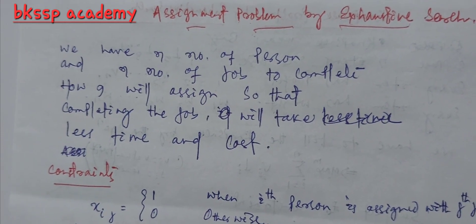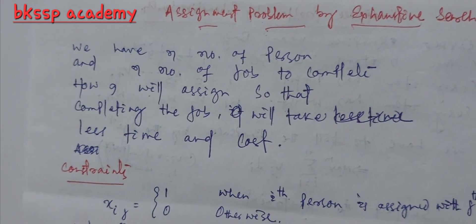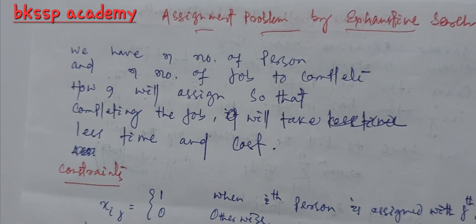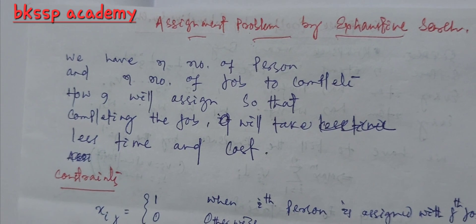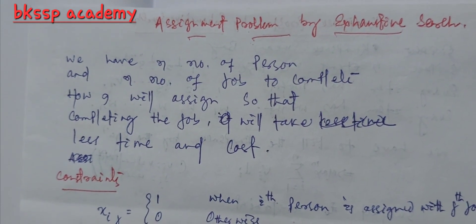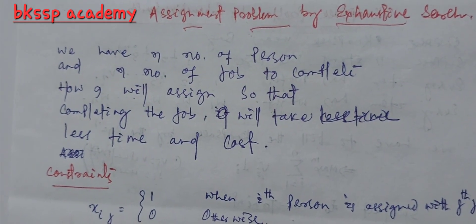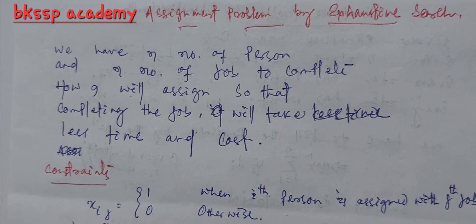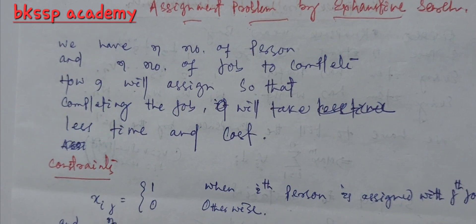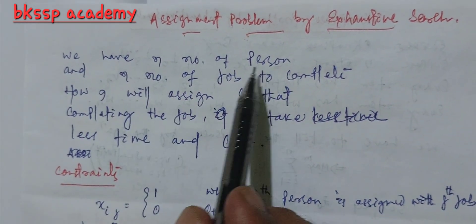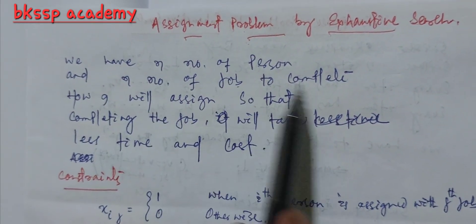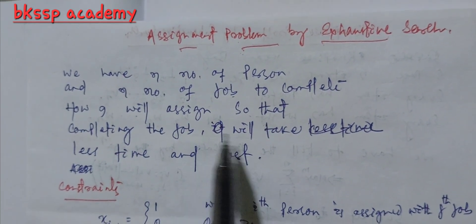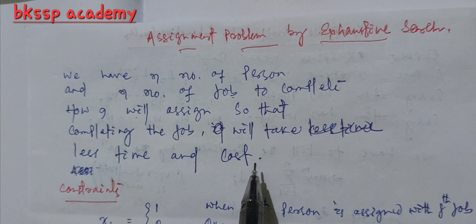Suppose we have n number of persons and n number of jobs to complete. We will arrange in such a way so that one person will do one work at a time and all the performance of the team will be completed as quickly as possible with less time. How will I assign so that completing the job will take less time and cost?